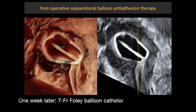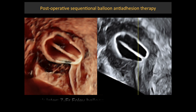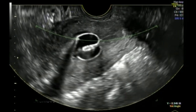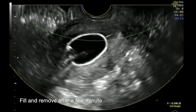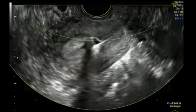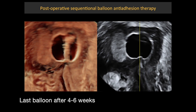The healing lasts between 6 to 8 weeks. However, adhesions between incised tissue may worsen the surgical results. Hence, one week after surgery, a 7 French Foley balloon catheter is placed into the uterine cavity and filled with 3 to 10 mLs of saline. The balloon is removed after a few minutes and the procedure is repeated once a week for a month. This requires confirmation in randomized controlled trials.